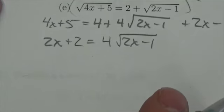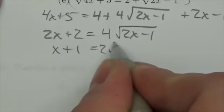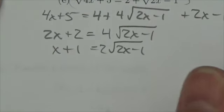Let's just divide both sides here by 2, just to kind of clean that up a little bit, so x plus 1 is equal to 2 root 2x minus 1. I just like that a little bit better.